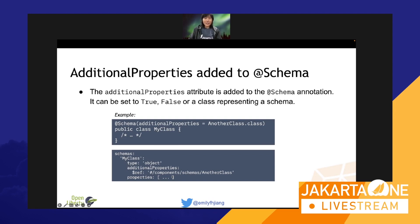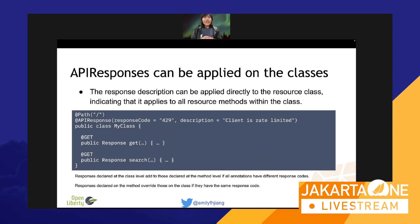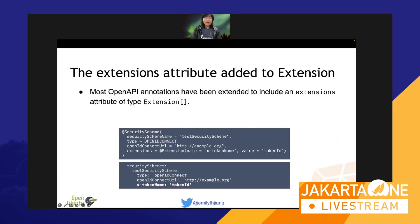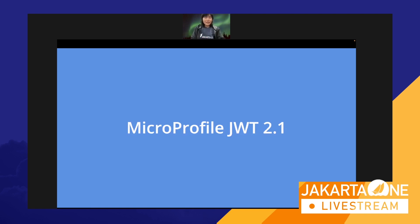The next thing is API responses — the @APIResponse annotation can now be added at the class level, not just the method level, meaning the response is applicable for all those methods. Also, extension attributes can be added to extensions — you specify the extension name and value, and when you generate the description, the name and value are automatically included. That's a quick run-through of MicroProfile OpenAPI 3.1.